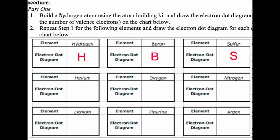Here are nine elements for you to try. Hydrogen, boron, and sulfur are three examples we'll do together. You can then work on helium, oxygen, nitrogen, lithium, fluorine, and argon on your own.